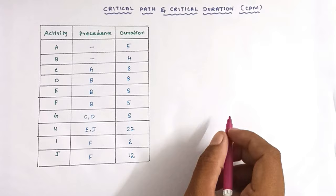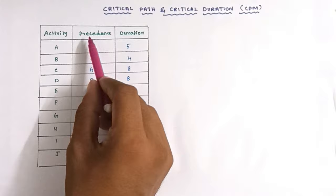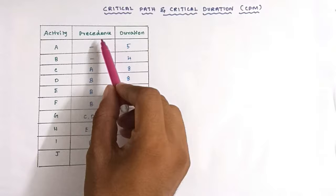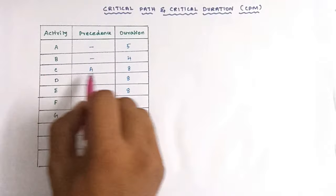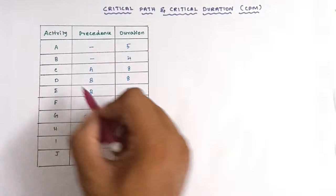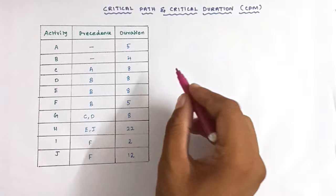Take this problem as an example. The activities and their precedence relationships are given along with durations. There are 10 activities: A, B, C, D, E, F, G, H, I, and J. For C, the precedent activity is A — meaning C starts when A is completed. After the completion of B, activity D will start. Likewise, every activity has a precedence relationship. First we have to draw the network path.